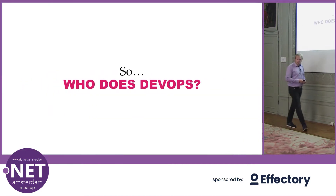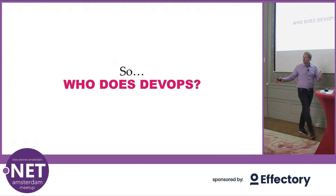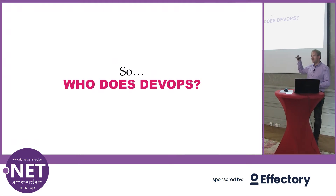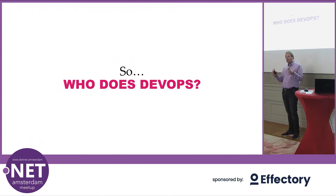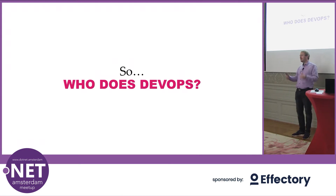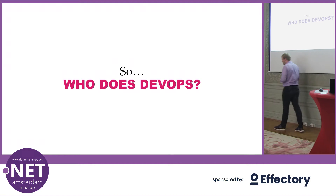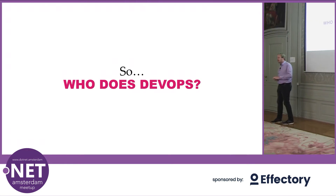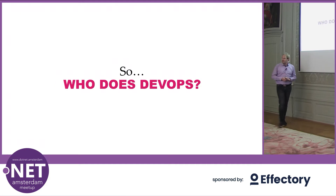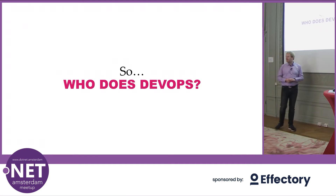I'm just wondering, who here does DevOps? So that's just 5 people out of 15. So there are a few guys who have an operations department deploying your code — is that correct? Those doing DevOps, do you think you publish your secrets in a secure way to your applications? Do you change them frequently? How often do you change them? Not at all?